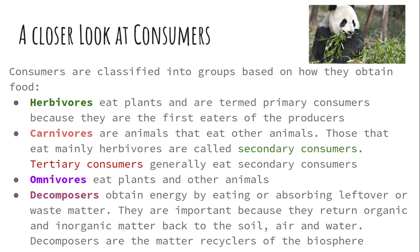Herbivores are what we call primary consumers because they are the first group that eats, and they only eat plants. Omnivores are animals that can eat either plants or animals. Every ecosystem also has decomposers that take matter and put it back into the soil to give it nutrients.